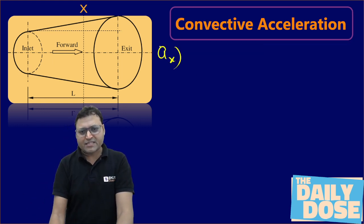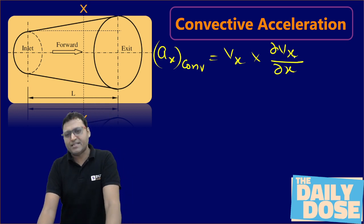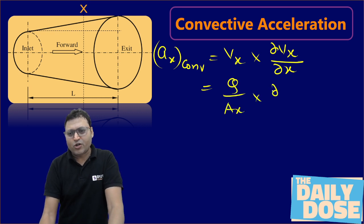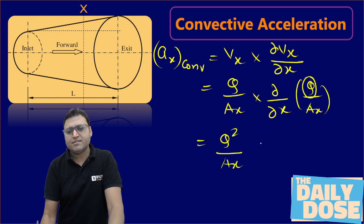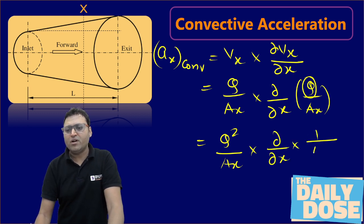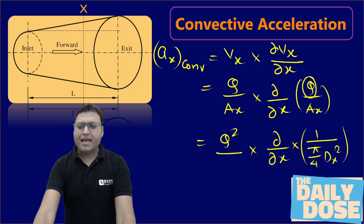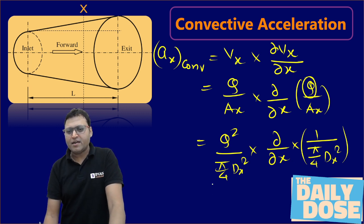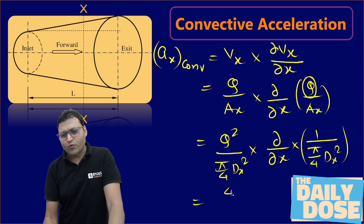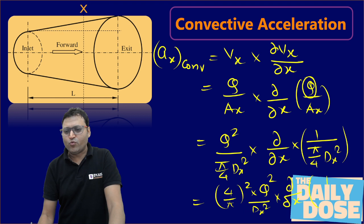Convective acceleration is given by Vx times ∂Vx/∂x. Writing Vx = Q/Ax, the convective acceleration becomes Q/Ax times ∂/∂x of (Q/Ax). Q can be taken outside, giving Q² / Ax times ∂/∂x of (1/(π/4·dx²)). Substituting Ax = π/4·dx², the expression becomes (16/π²) times Q²/dx² times ∂/∂x of (1/dx²), where dx = 0.2 + 0.3x.